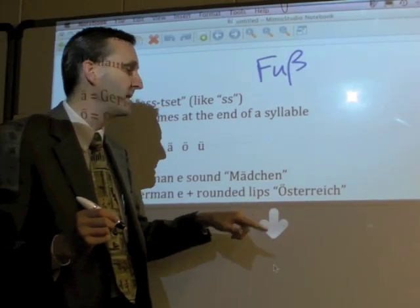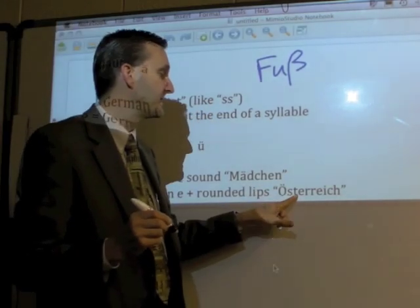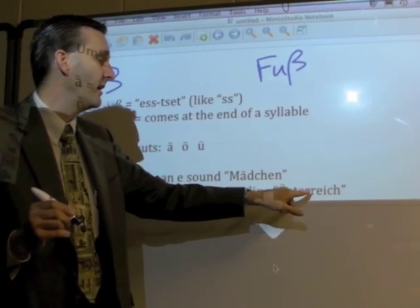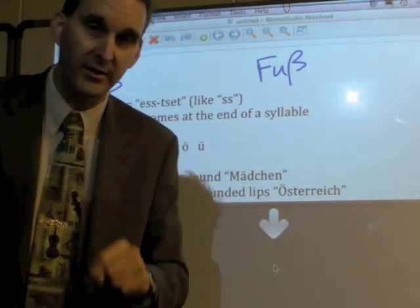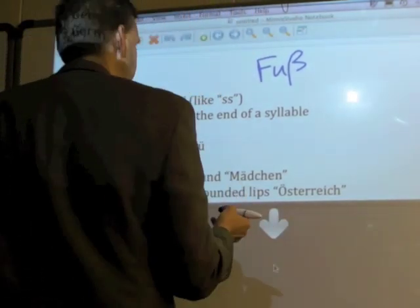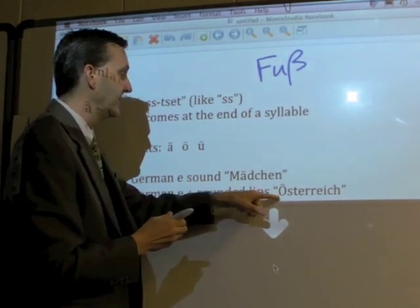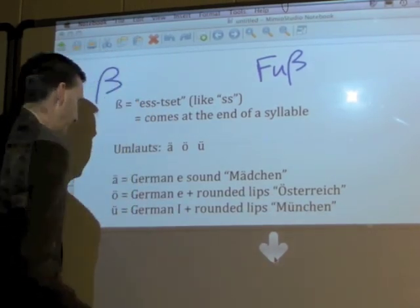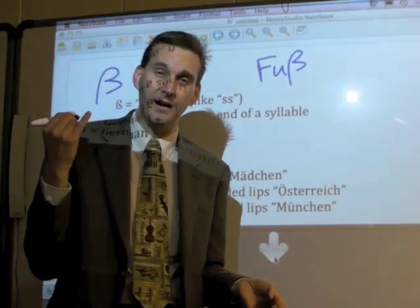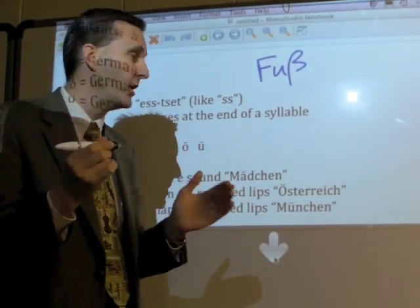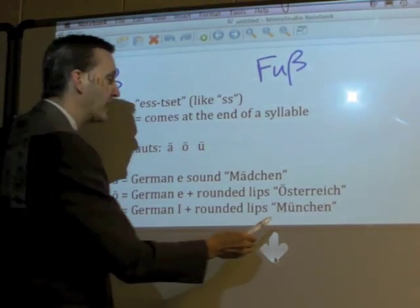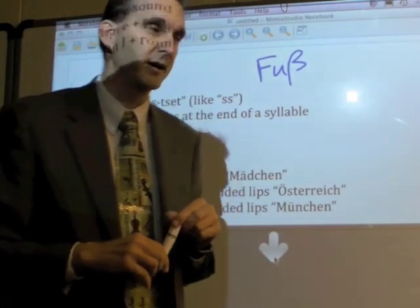'Österreich' is spelled capital O-umlaut, S-T-E-R-R-E-I-C-H. When I grade your notes, if I have something capitalized, that's not optional — you have to capitalize that, it is part of the spelling. The U-umlaut: you do the same thing. You start with 'ee', keep your teeth and tongue where they are, then round your lips: 'ee', 'ü', 'ü'. Like in 'München' — M-Ü-N-C-H-E-N, 'München'.